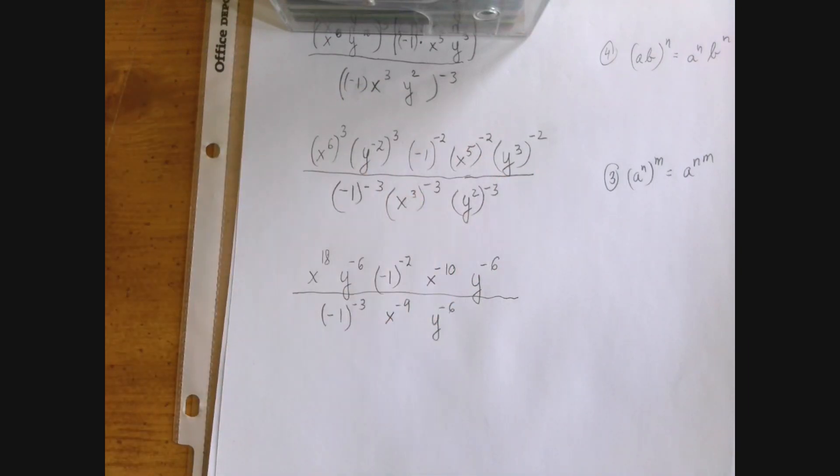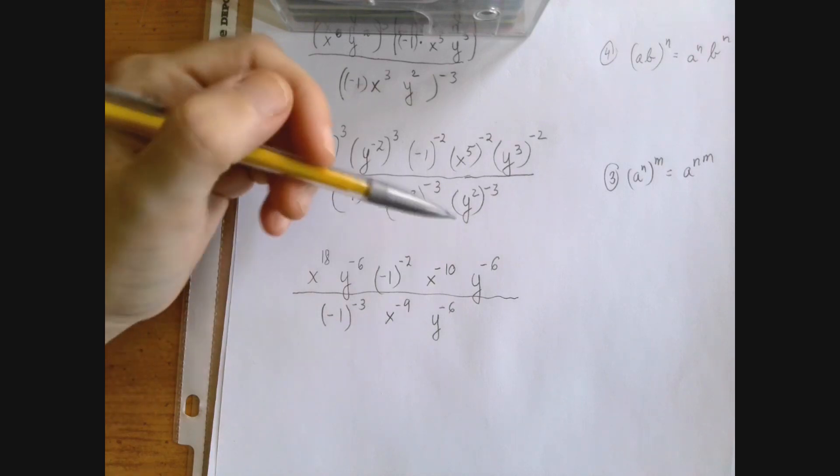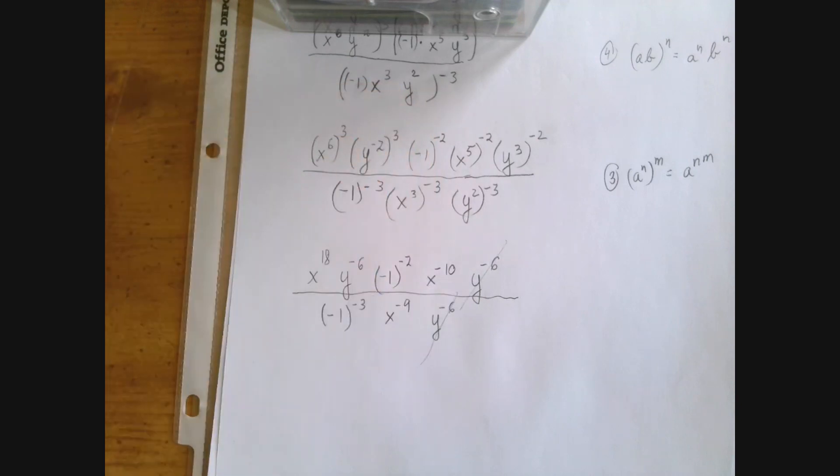Okay. So this is one of those problems where you can actually see the same thing upstairs and downstairs, you can just knock them out without having to simplify much of it. Okay. What should we do next? I would put the numbers first, then x, then y, in both the numerator and the denominator.